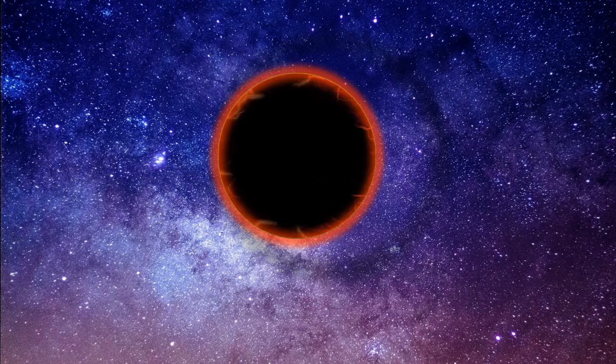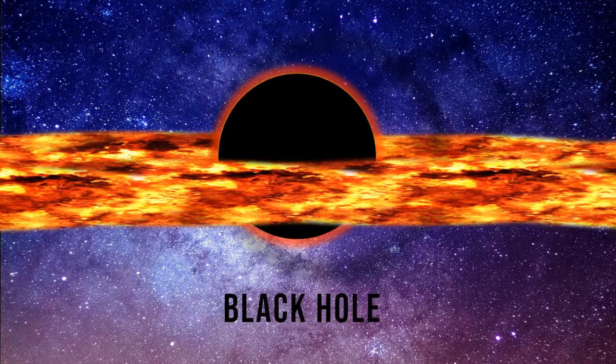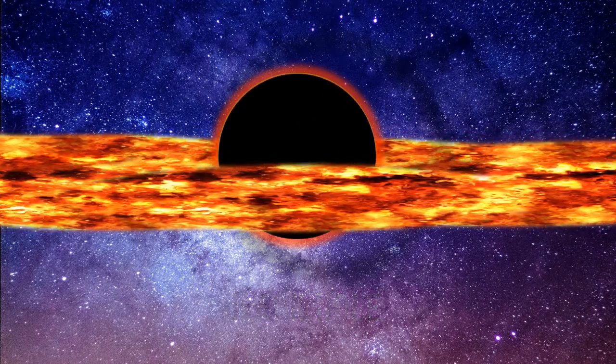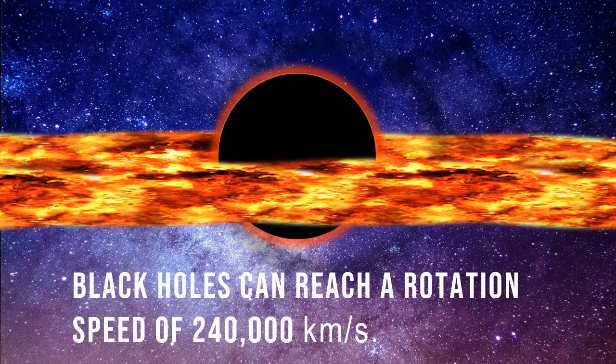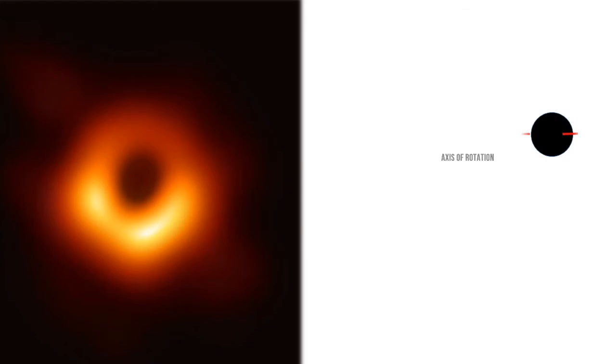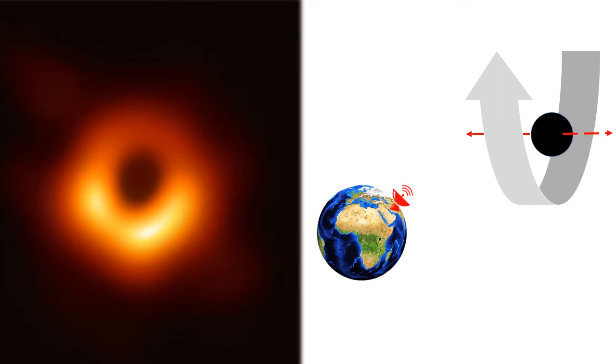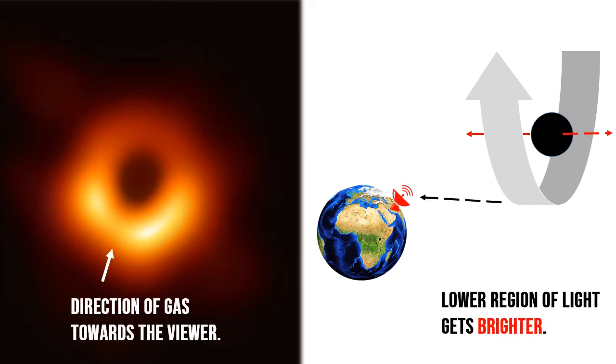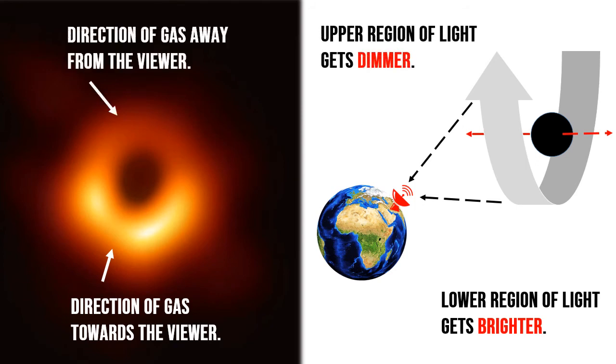Black holes can rotate at tremendous speeds, sometimes reaching 0.8 times the speed of light which is nearly 240,000 kilometers per second. This black hole is rotating in such a way that the lower region of the gas has its direction towards us. And therefore, the radiation coming to us gets boosted and looks brighter while the upper layer of the gas is moving away. That's why it looks dimmer.